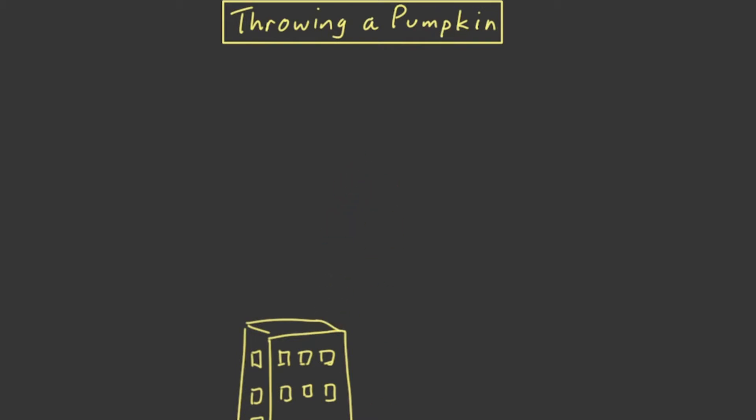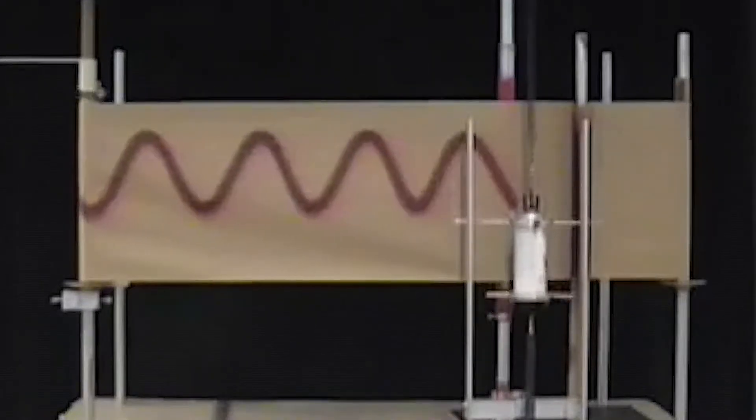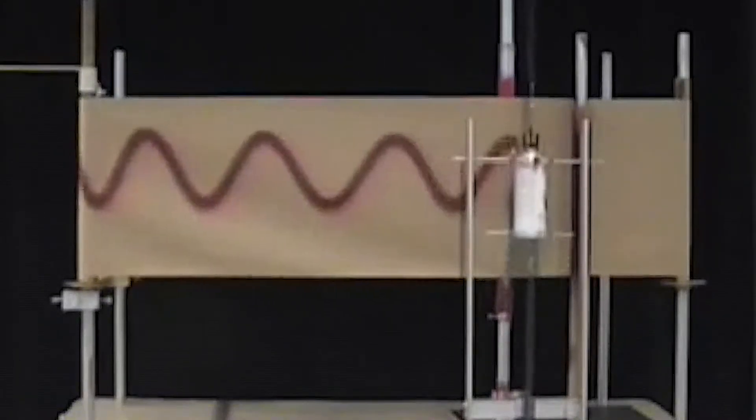Everything from the pumpkin in motion image and the spray can on the spring to illustrate differentiating sine and cosine. Can you talk about those kinds of images? Those aren't applets, but they're ways to visualize calculus.